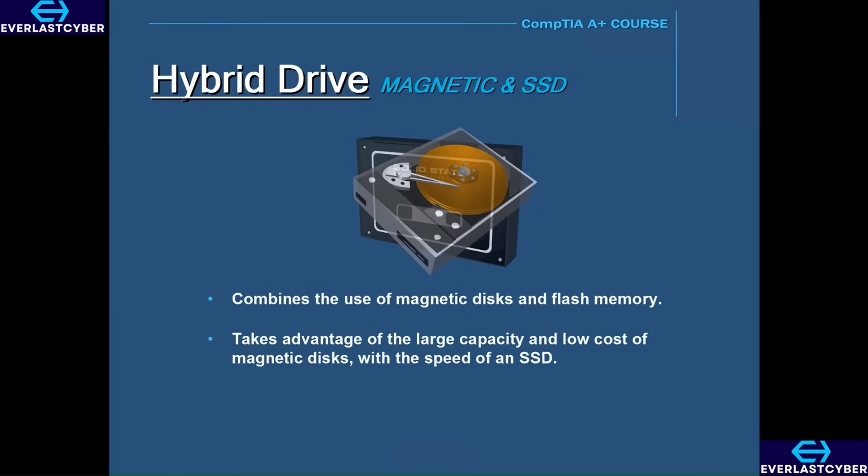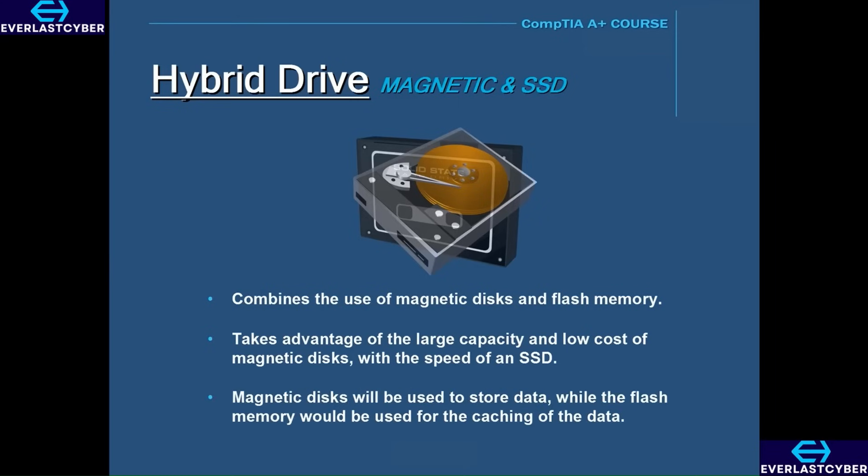Hybrid drives take advantage of the large capacity and the low cost of magnetic disks with the speed of an SSD. The magnetic disks will be used to store data, while the flash memory will be used for the caching of the data. Hybrid drives are primarily used where cost is an issue because SSD drives are considerably more expensive than magnetic disk drives.